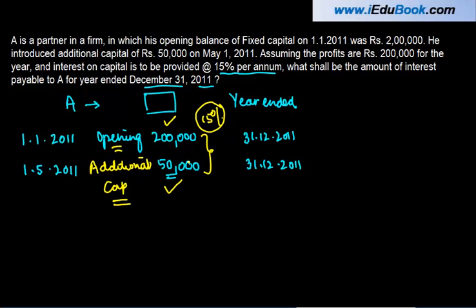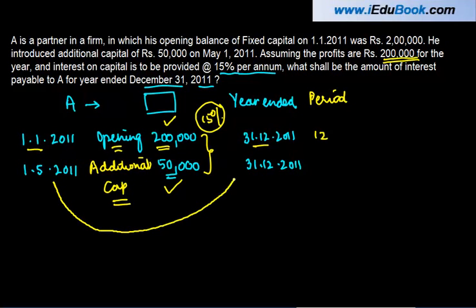This is subject to the profits during the year and the terms of the partnership deed. The total profit available for the year is ₹2 lakh. Let us first find out what interest on capital has to be paid. For the opening capital, the period is from 1-1-2011 until 31-12-2011, which is 12 months. For the additional capital, the period is from 1-5-2011 until 31-12-2011, which is 8 months.